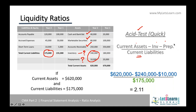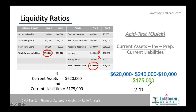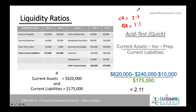Quick assets divided by current liabilities gives the quick ratio. When the quick ratio is greater than one, the company's short-term financial position is good. The current ratio should preferably be at least 2:1, whereas the quick ratio should be at least 1:1. If the current ratio is below 2:1 or the quick ratio is below 1:1, the company may face problems in meeting short-term payment obligations.